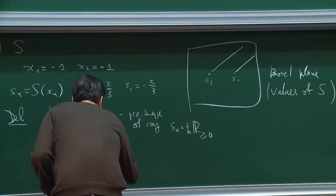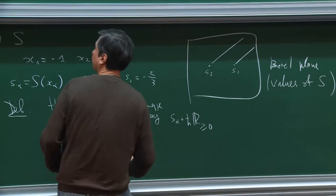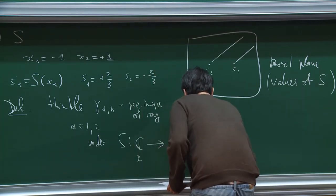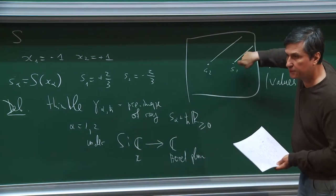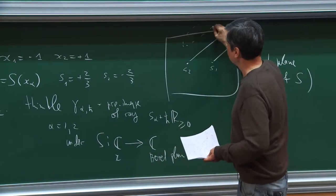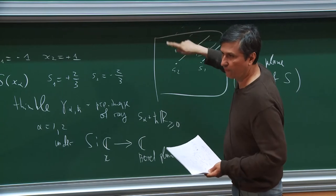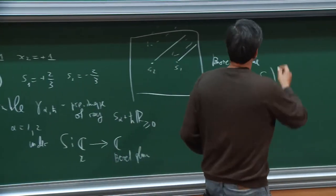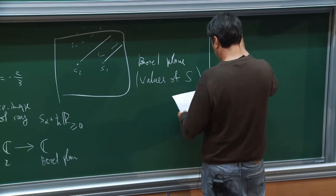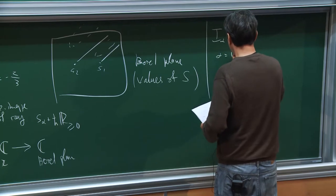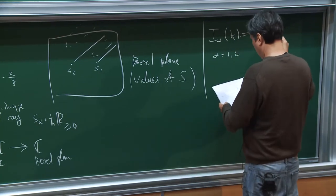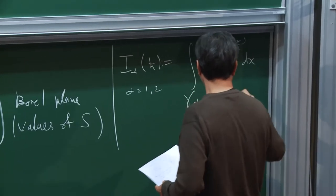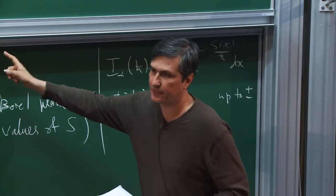Under the map S from the x-variable plane to the Borel plane, if you see that the map is doubly ramified at this point and consider the pullback, you get upstairs two copies of ℝ — two copies of a real ray — and these will be two domains of integration. We define the integral E_α(h-bar), for each critical point α = 1, 2, as the integral of the exponential over this thimble.